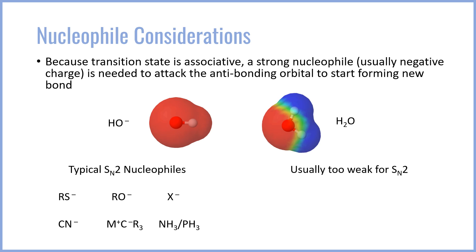Weak nucleophiles — those too weak for SN2 — include alcohols and water. Although oxygen has a lone pair, it's not very available because of oxygen's high electronegativity, so these tend not to react via SN2. Even if you put a primary halide, something very reactive, in water, it will not tend to undergo solvolysis through an SN2 pathway, because water is just too weak of a nucleophile.